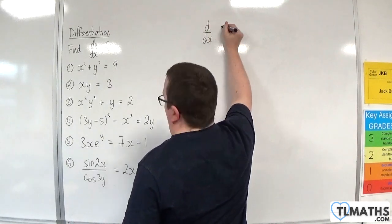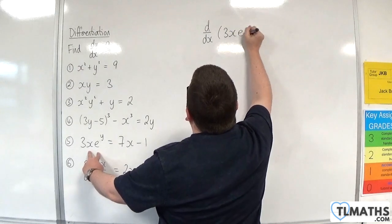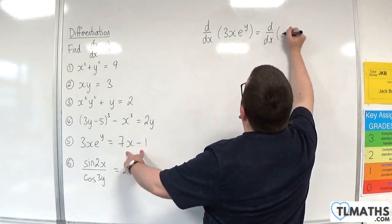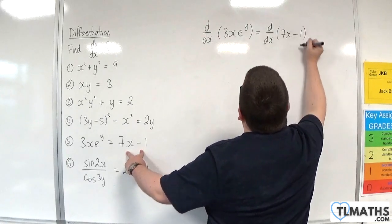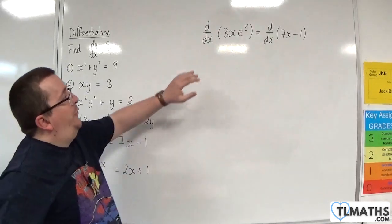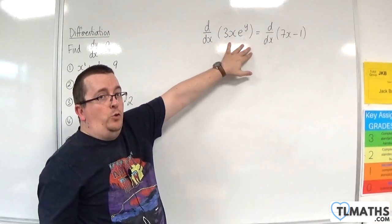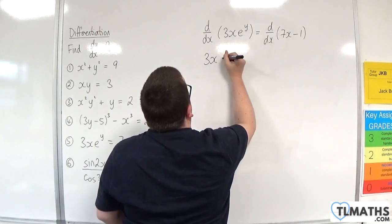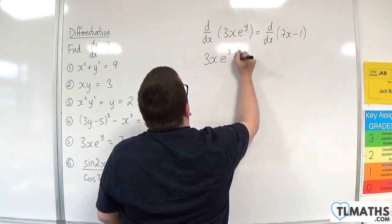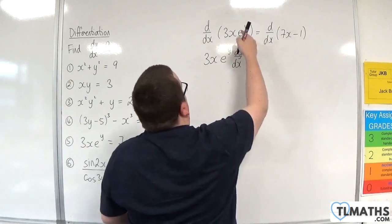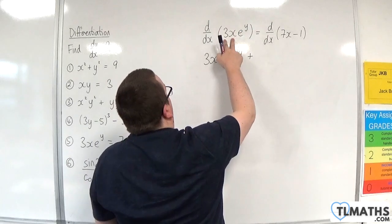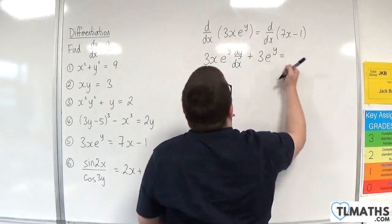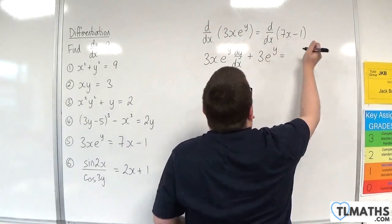Number 5: d by dx of 3x e to the y equals d by dx of 7x minus 1. For the left-hand side I use the product rule on 3x times e to the y. The first times the derivative of the second gives 3x e to the y dy by dx, plus the second e to the y times the derivative of 3x, which is 3 — so plus 3 e to the y. The right-hand side differentiates to 7.